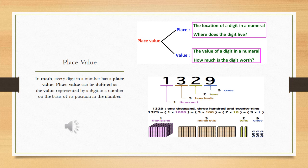Now, after understanding the international number system and digits, we are moving towards the next topic: place value. In maths, every digit in a number has a place value. Place value can be defined as a value represented by a digit in a number on the basis of its position in the number. It may sound difficult but it is not difficult, it is so easy.